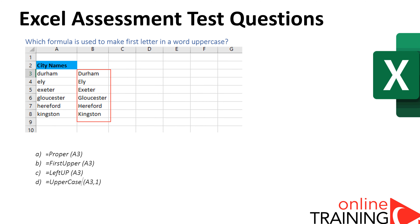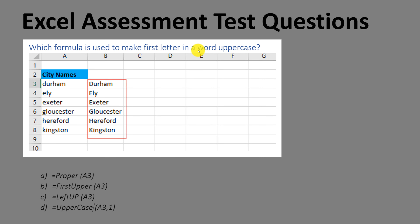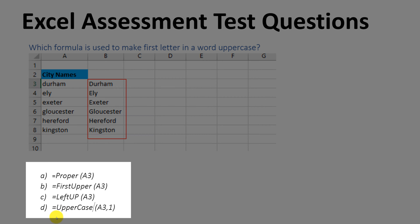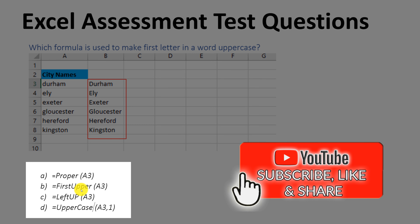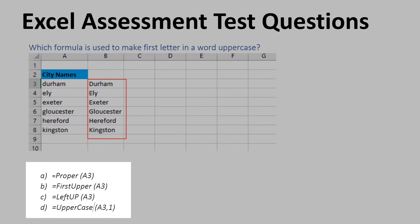Very often, you might be tested on your knowledge of Excel string manipulation. Here is a simple question: which formula is used to make the first letter in a word uppercase? In column A all values are lowercase, and in column B the same values are shown with only the first character uppercase. The four choices are: proper, first upper, left up, and uppercase. Which one would you choose?